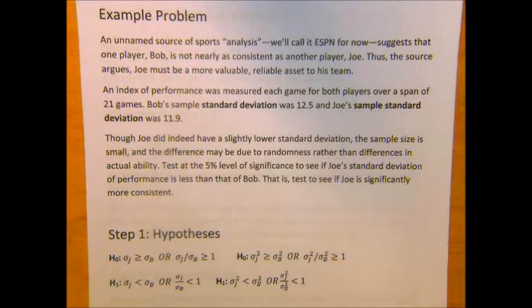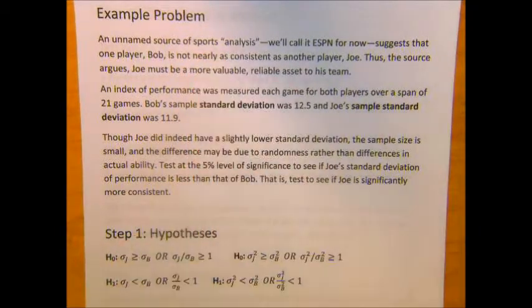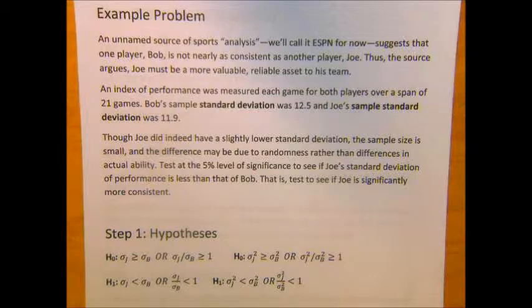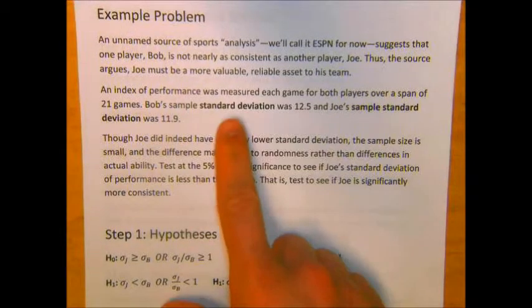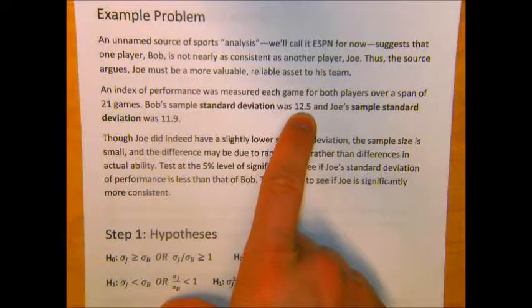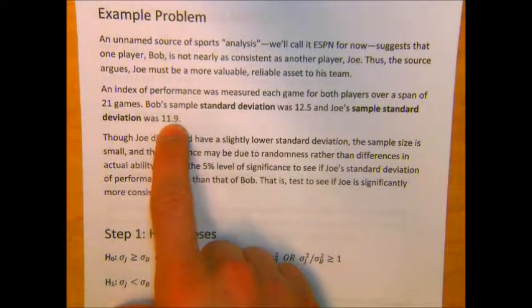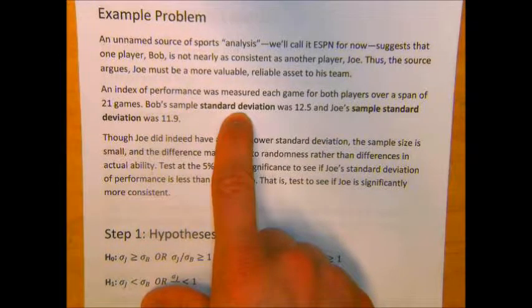Let's do another example problem. An unnamed source of sports analysis, we'll call it ESPN for now, suggests that one player, Bob, is not nearly as consistent as another player, Joe. An index of performance was measured each game for both players over a span of 21 games. Bob's sample standard deviation was 12.5 and Joe's sample standard deviation was 11.9. Note here that I haven't given you the sample variances, but rather the sample standard deviations.